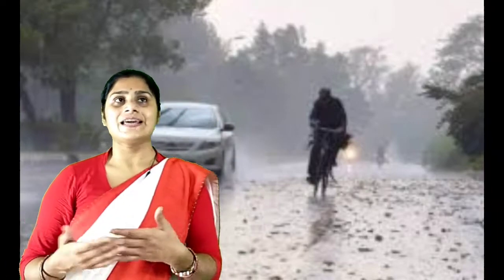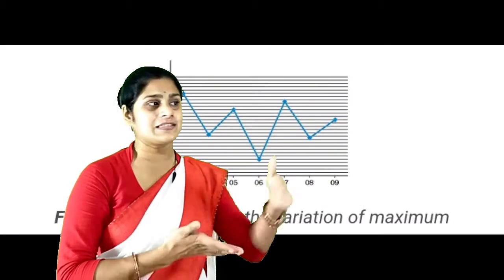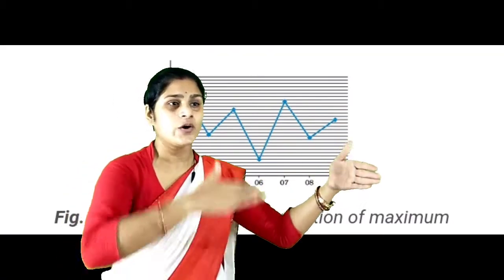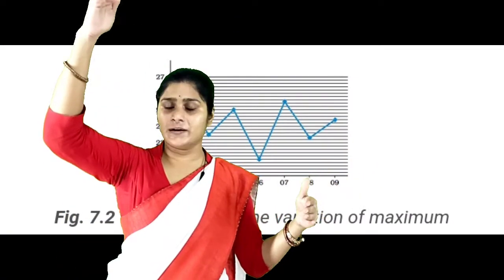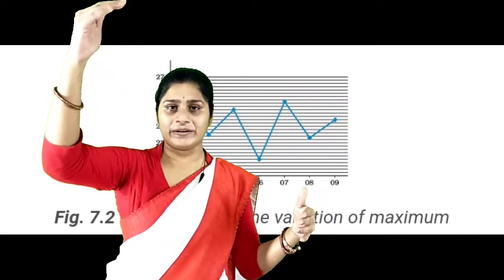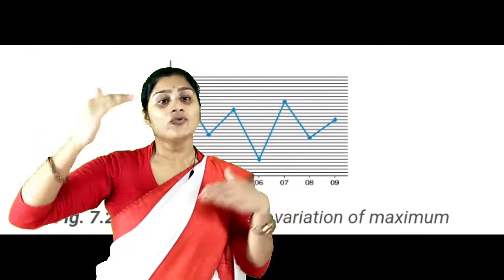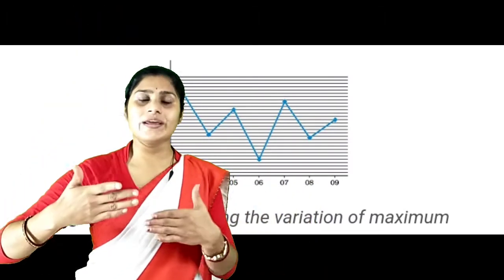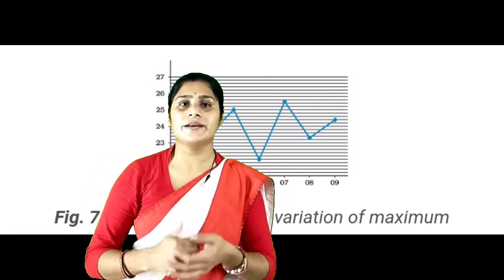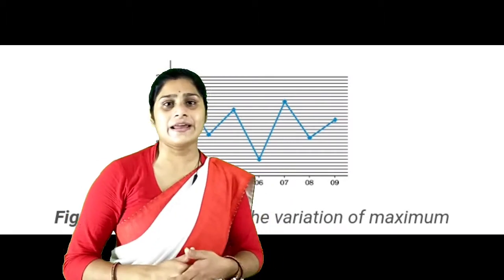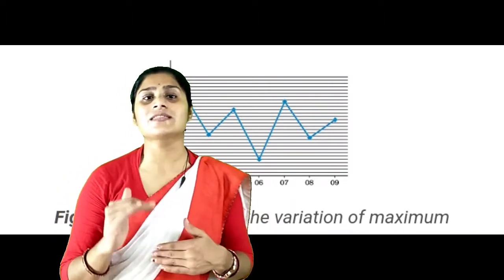After that, when we have recorded the rainfall, there is also a graph. The minimum temperature on 3 September 2020 is 23 degrees Celsius.